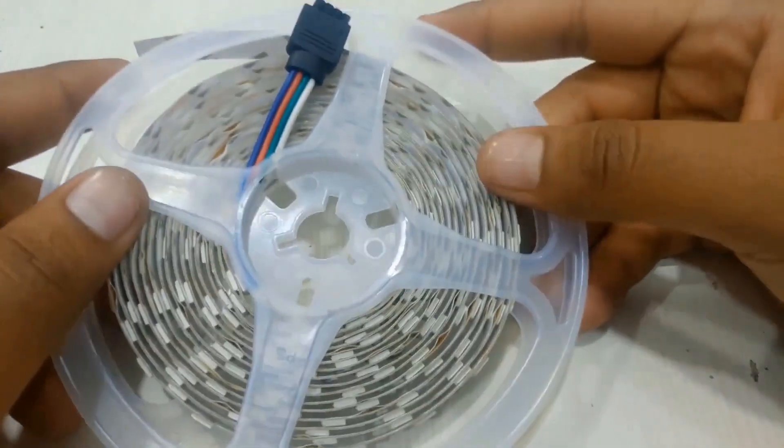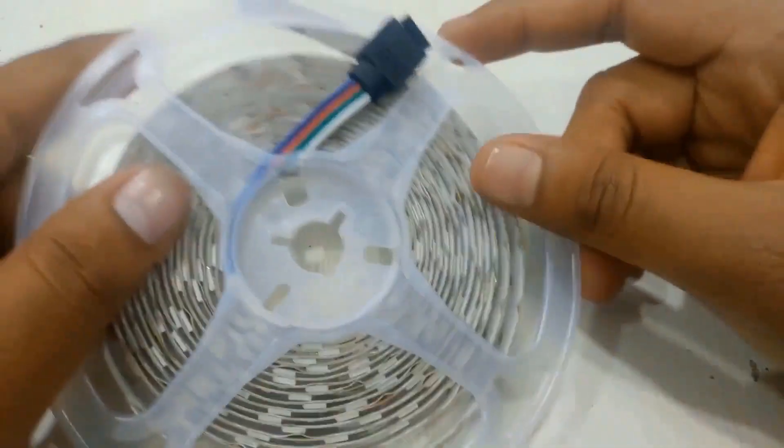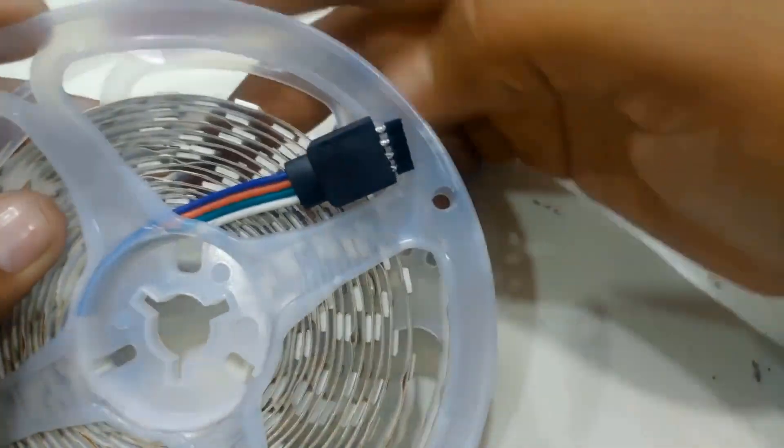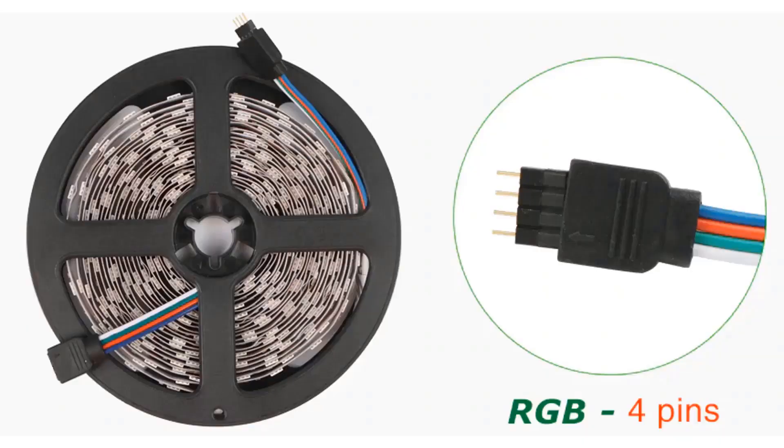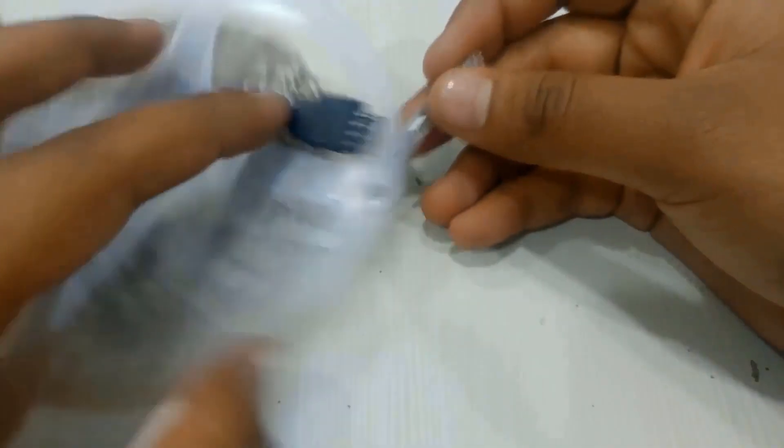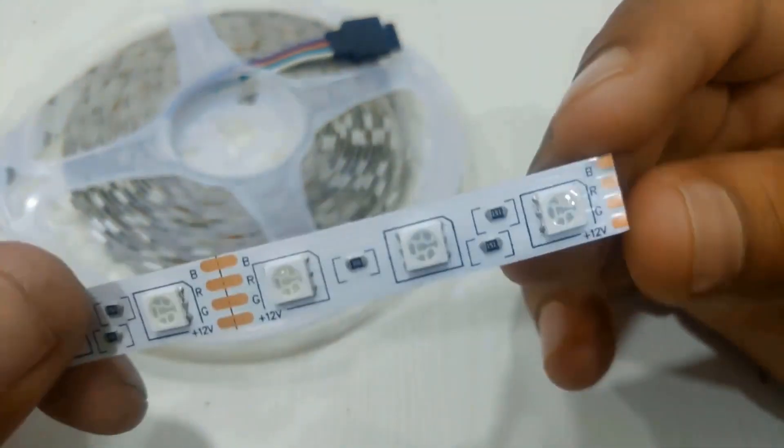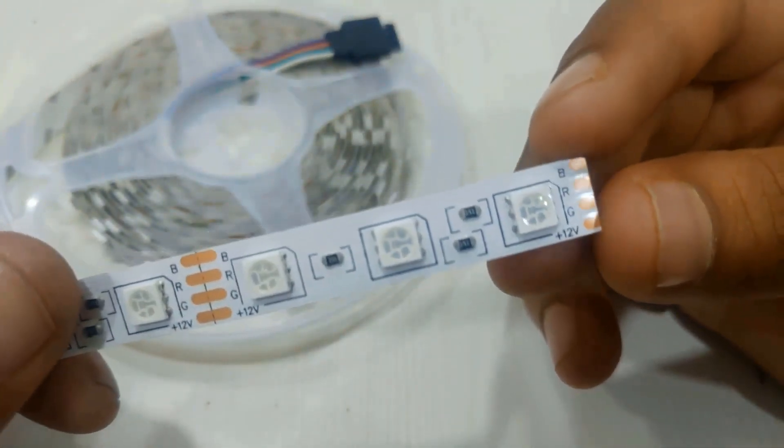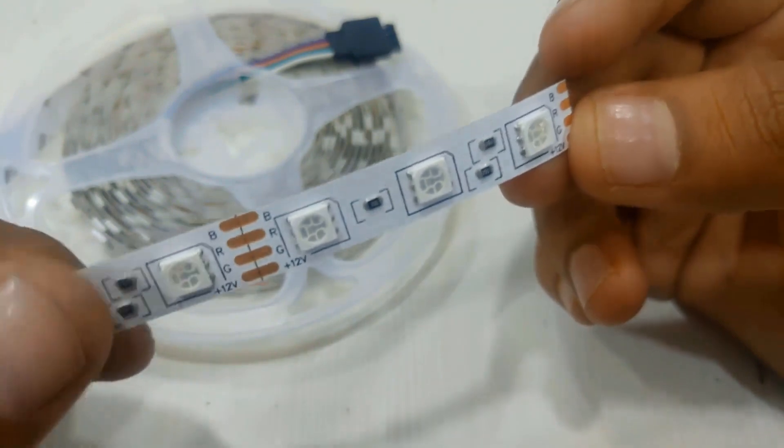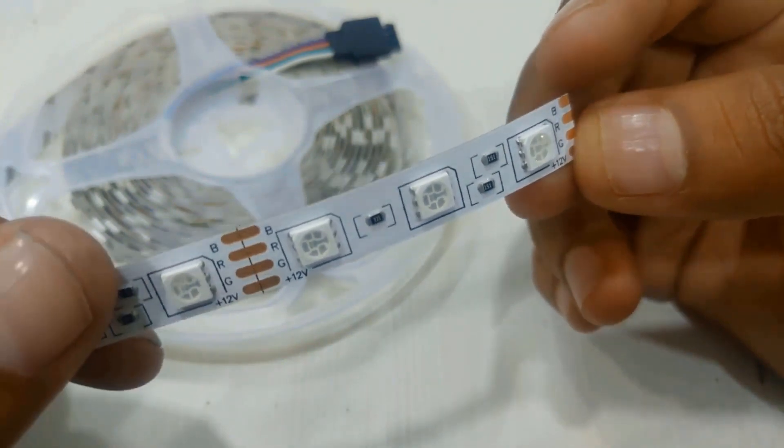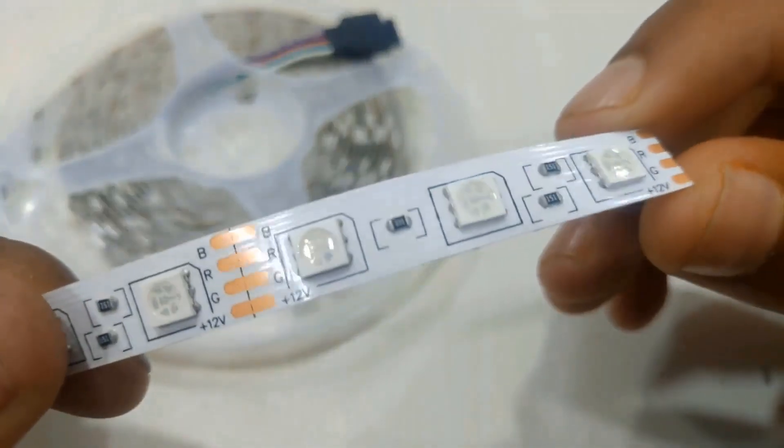This is the RGB LED strip that I recently purchased from Amazon. The purchase link is given in the description below. It comes with four wires with RGB color and a white wire, which is usually the 12-volt VCC. When you stretch this wire, there are cutting marks between the LEDs, and between the cutting marks there are three SMD package LEDs and three SMD resistors.